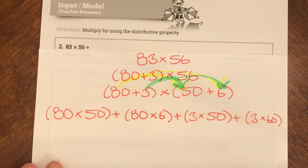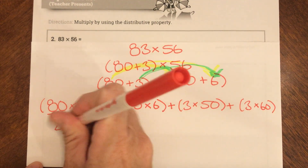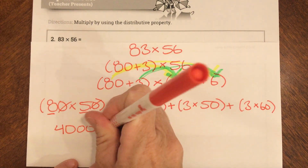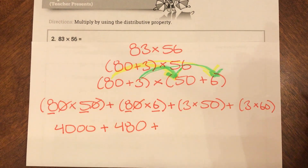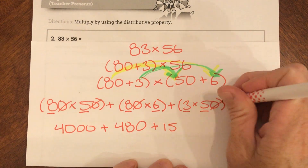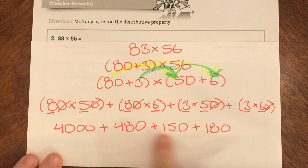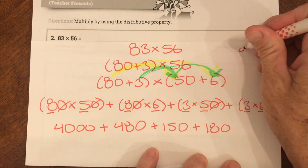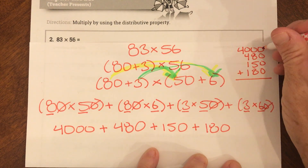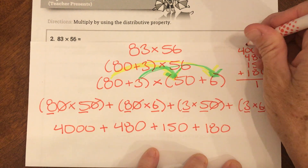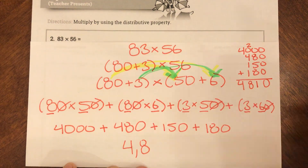That's probably the trickiest step — the distributing. Now I can solve using the zero trick. 8 times 5 is 40, and add two zeros: 4,000. Plus 8 times 6 is 48, add one zero: 480. Plus 3 times 5 is 15, add one zero: 150. Plus 3 times 6 is 18, add one zero: 180. These are our partial products. Now we add them all to get our final product: 4,000 plus 480 plus 150 plus 180 equals 4,810.